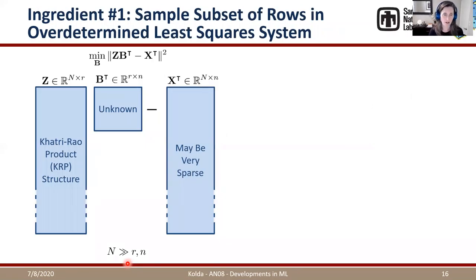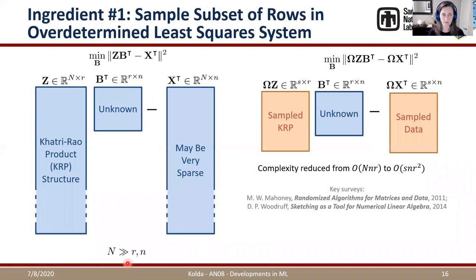Our approach combines several ingredients. The first is subsampling: we subsample full rows of Z and corresponding rows of X^T, weighting them appropriately. If the sampling matrix Ω has only s rows, complexity reduces from N·n·R to s·n·R². This is a big savings when s is much smaller than N. The key question is how to sample so that the solution from the sampled system relates meaningfully to the full solution.